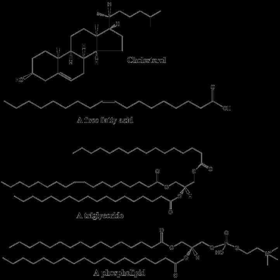Sterol lipids, such as cholesterol and its derivatives, are an important component of membrane lipids, along with the glycerophospholipids and sphingomyelins. The steroids, all derived from the same fused four-ring core structure, have different biological roles as hormones and signaling molecules. The 18-carbon steroids include the estrogen family, whereas the C19 steroids comprise the androgens such as testosterone and androsterone. The C21 subclass includes the progestogens as well as the glucocorticoids and mineralocorticoids. The secosteroids, comprising various forms of vitamin D, are characterized by cleavage of the B-ring of the core structure.